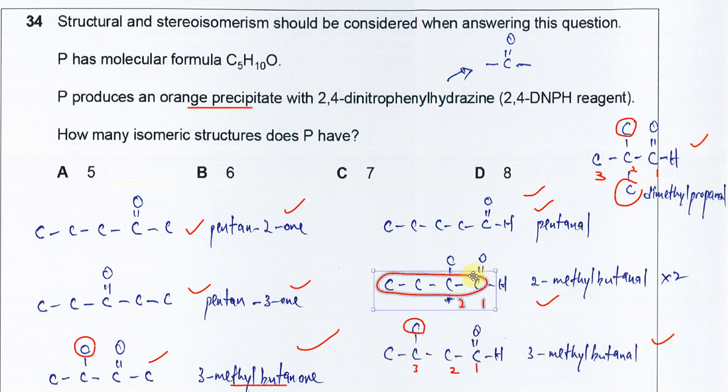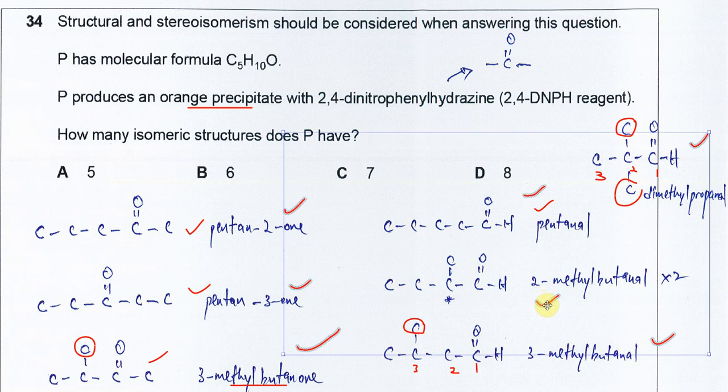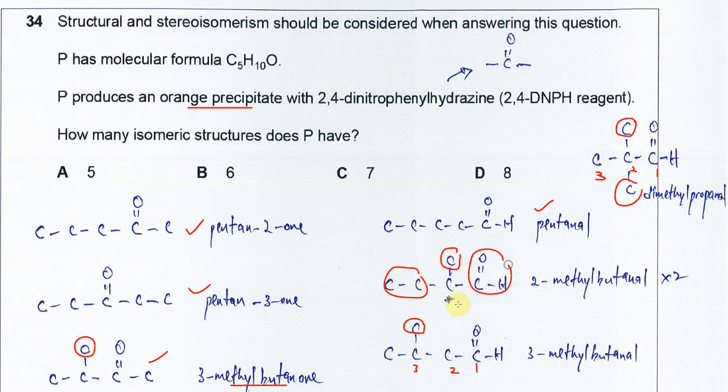But please remember, for the 2-methylbutanal here, because this carbon with 1, 2, 3, there is another hydrogen here. This carbon with 4 different groups, so it's a chiral carbon. It can form optical isomers. Means, this one, you have to add another one. So means just times 2. So therefore, total, it will be 8 isomers.